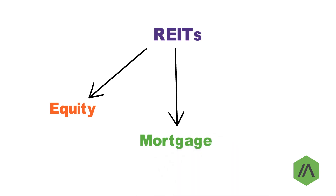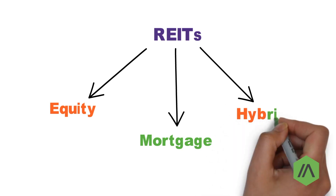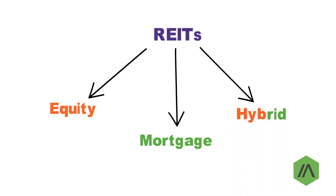Number two: mortgage REITs. Mortgage REITs derive a majority of their income from mortgages and mortgage-backed securities. The profit is generated from the spread between the interest rate they pay to acquire funds and the interest rate they receive from mortgages and mortgage-backed securities. Number three: hybrid REITs. Hybrid REITs generate funds from rental properties, mortgages, and mortgage-backed securities.